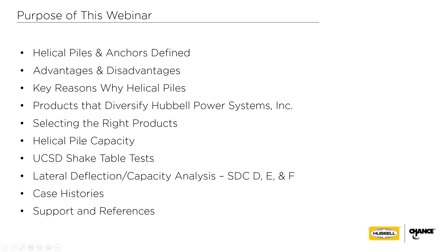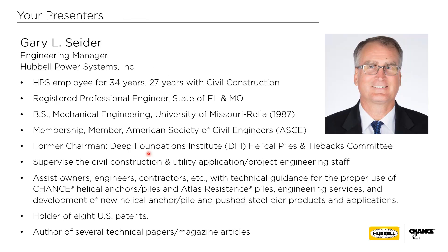We'll talk about capacity based upon building code requirements, then feature some shake table tests done at the University of California, San Diego. We'll use that data to describe how we look at lateral deflection and lateral capacity analysis of helical anchors and piles in soils, particularly for seismic design categories D, E, and F, which is one of the new things we've just recently been able to accomplish.